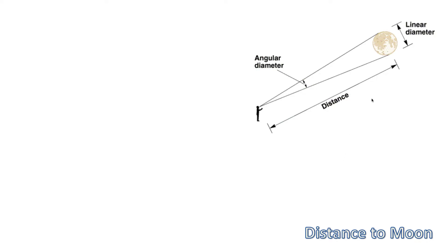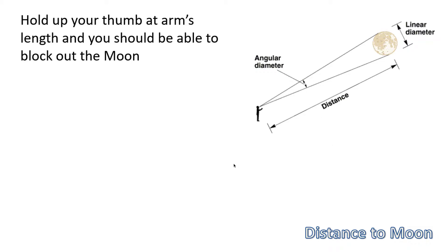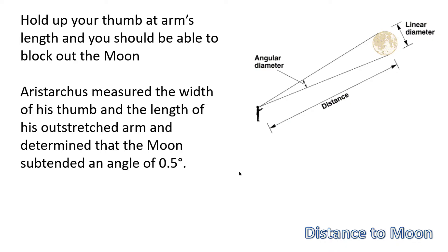Okay, measuring the distance to the moon. This is a familiar picture from lesson 35 where we had the angular diameter of the moon. If you hold your thumb up at arm's length, you can just about block out the moon. When Aristarchus did this, he determined that the moon subtended an angle of 0.5 degrees or 30 arc minutes.